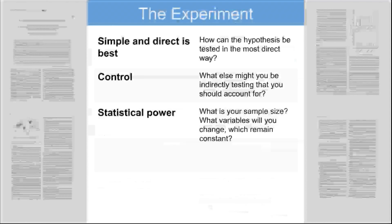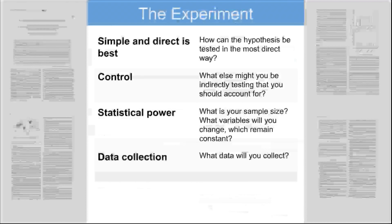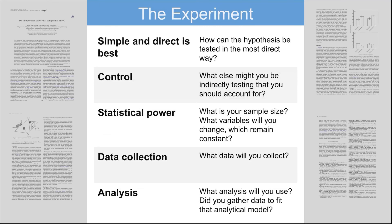You also want to have a good sample size, because if you have a small sample size, your results could be due to chance. For example, if you want to show a penny is 50-50 heads and tails but you only flip it twice and both times it's heads, you can't say the penny only comes up heads. You would have to flip it around 100 times to show it's really 50-50. Then you collect and analyze the data.